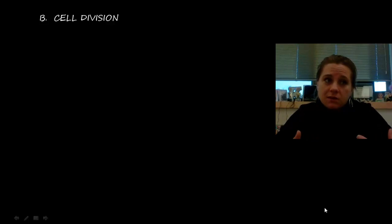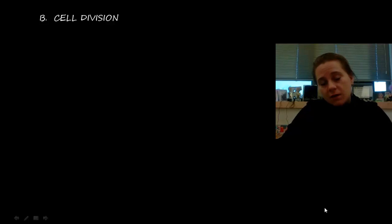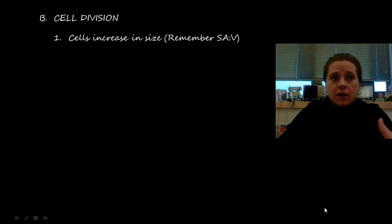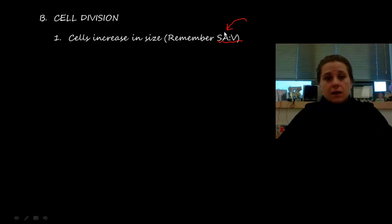Cell division is really important. We know that cells come from pre-existing cells, and we are made up of many cells that came from a single cell — one cell divides into two, two into four, four into eight, and so on. Cells grow bigger, but there's a trade-off: the bigger they get, the less efficient diffusion is. The surface area to volume ratio gets too low, and that's one of the signals telling a cell it's time to divide.